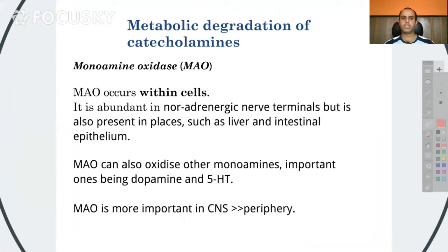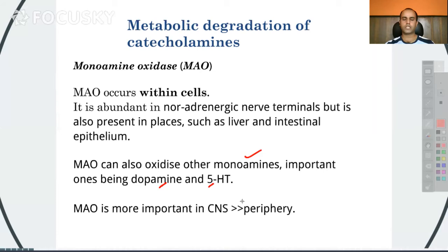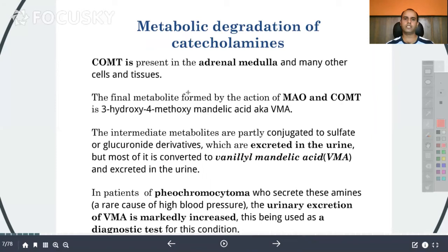Monoamine oxidase (MAO) occurs within the cells. It is basically abundant in noradrenergic nerve terminals, but is also present in different places like the liver and intestinal epithelium. It can oxidize other monoamines, the important ones being dopamine and 5-hydroxytryptamine. MAO is more important in the CNS as compared to the periphery.